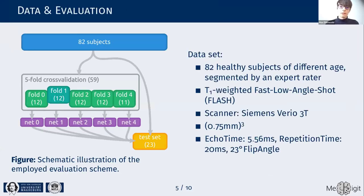We had data from 82 healthy subjects of different age groups, acquired using a neuromelanin-sensitive MRI sequence, with details given on the right. We randomly chose 23 subjects as a test set and performed a five-fold cross-validation on the remaining ones, yielding five different network versions that were all applied to the test set. The reported values are based on the entirety of all these networks.